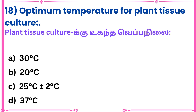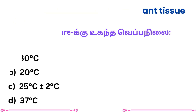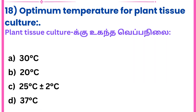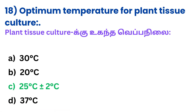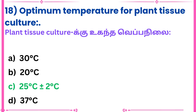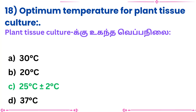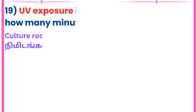Question 18: What is the optimum temperature for plant tissue culture? Answer: 25 degrees Celsius plus or minus 2 degrees Celsius.